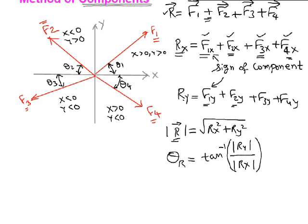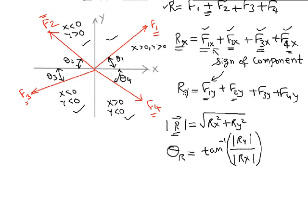If rx is greater than 0, ry is greater than 0, the resultant will lie in the first quadrant. If rx is less than 0, ry is greater than 0, it will lie in the second quadrant. Then if rx and ry both are less than 0, it lies in third quadrant. And if rx is positive and ry is negative, it will lie in fourth quadrant.